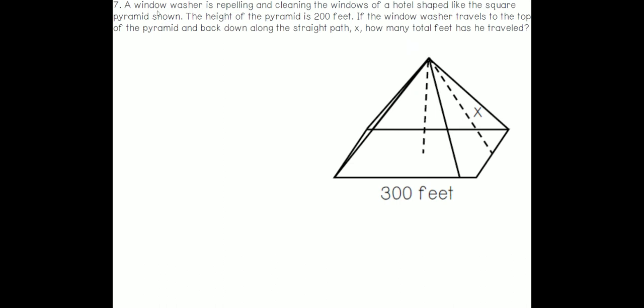For our last example, we have a window washer who is repelling and cleaning the windows. That means he's going up and down this pyramid. So he's repelling and cleaning the windows of a hotel shaped like the square pyramid shown. The height of the pyramid is 200. If the window washer travels to the top of the pyramid and back down along the straight path X, so our straight path X is right over here. You can see the little X right there. How many total feet has he traveled? So if he goes all the way up and all the way down that slant height, how many feet has he traveled? The height of the pyramid is 200 feet, which means this length is 200.